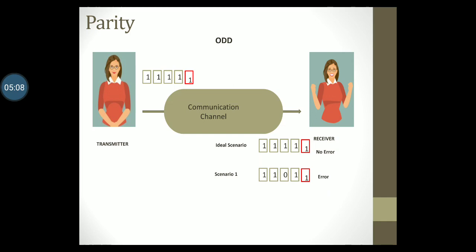She labels the data as an error and requests for transmission again. Let's take another scenario. What if the data that was sent gets distorted and reaches the receiver like this? Notice here that two bits have changed. The receiver will count the number of ones in the data received and notices that it confirms with the odd parity scheme and will unfortunately accept the data. This is the disadvantage of the parity scheme, since it cannot detect if there is more than one bit that gets changed during transmission. For this reason, parity is called a single bit error detecting code.